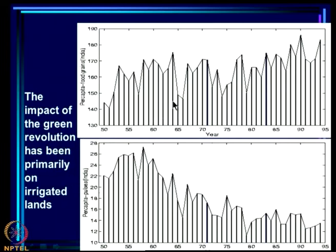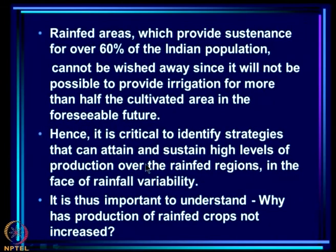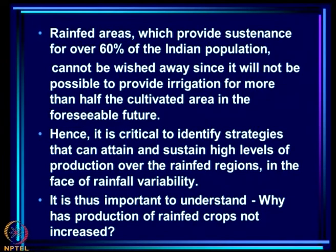The impact of the green revolution has been primarily on irrigated lands. In dry land crops there has been hardly any increase in production. Rain-fed areas provide sustenance to over 60 percent of the Indian population and cannot be wished away. There is a limit to how much irrigation can be expanded, and it will not be possible to provide irrigation for more than half the cultivated area in the foreseeable future. It is therefore critical to identify strategies that can attain and sustain high levels of production over rain-fed regions in the face of rainfall variability.